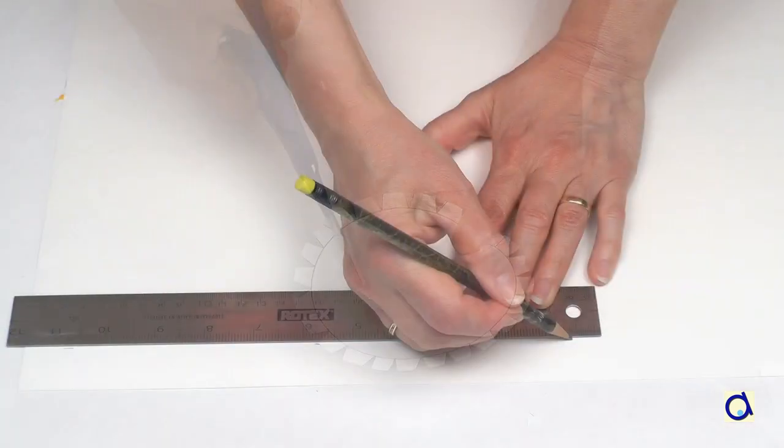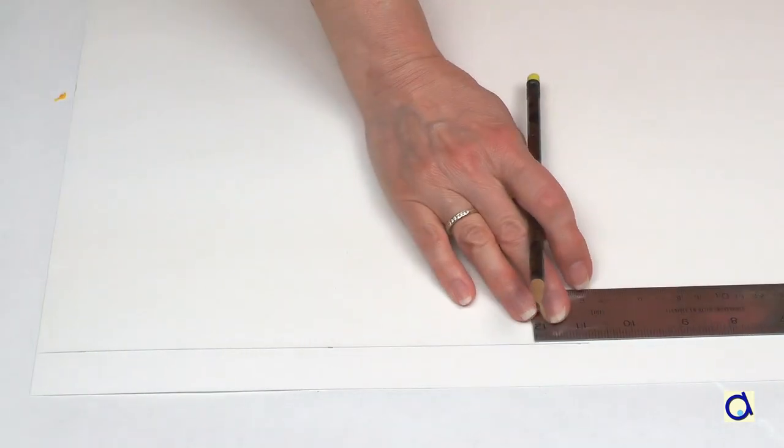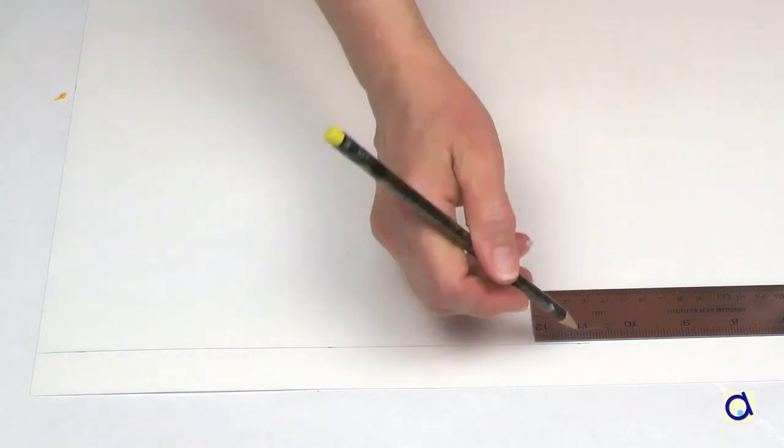Take a sheet of Bristol paper and draw along a 2.5 cm or 1 inch wide strip. Cut the paper strip.